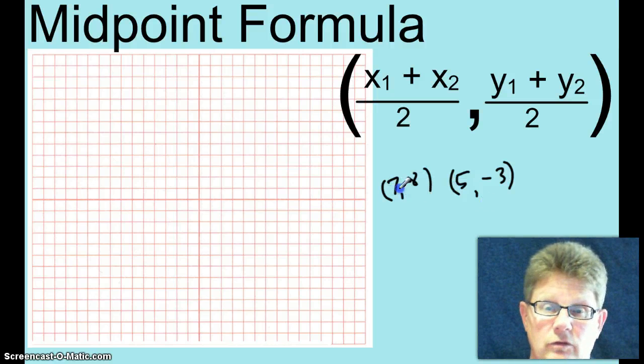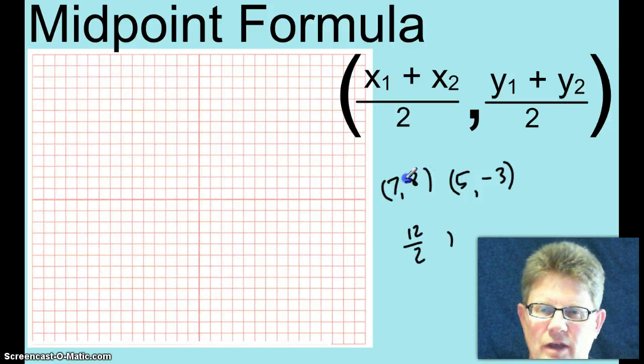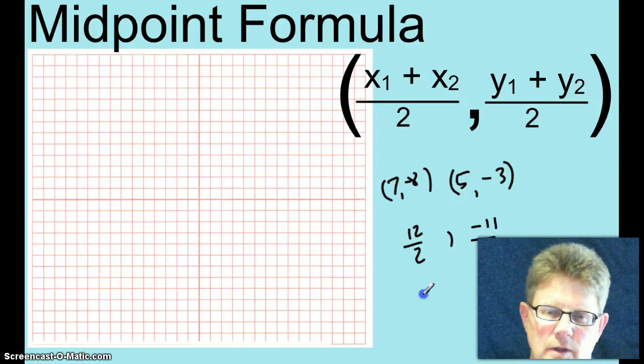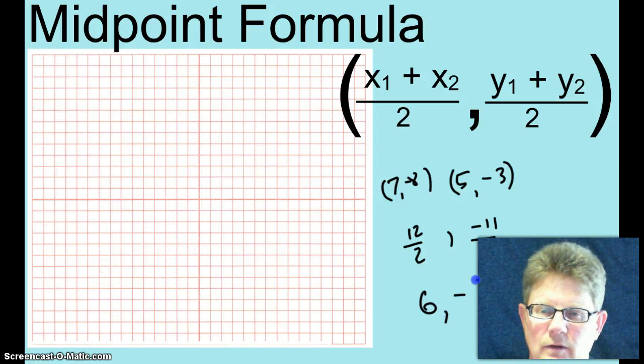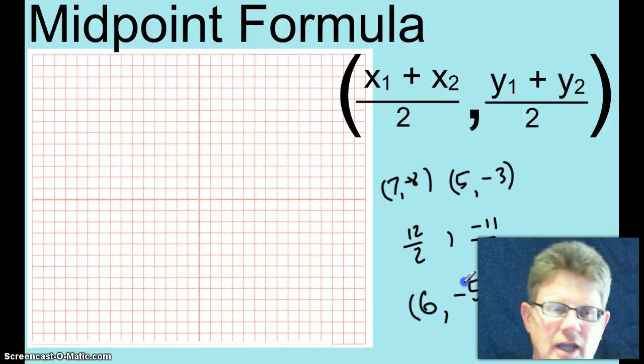So you just add those, the 7 and the 5. Those are the two X values. 12 over 2. Add the two Y values, negative 8 and negative 3. Add those together, negative 11 over 2. And the coordinates of that midpoint, 6, negative 5 and a half.